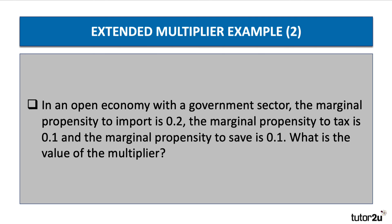Let's have a second example. The propensity to import is 0.2, propensity to tax is 0.1, and propensity to save is 0.1 as well — so all three leakages are lower. You should now be able to predict what will happen to the value of the multiplier. Do a quick calculation, then press play when you want to go through the answer together.